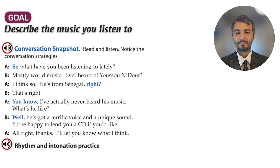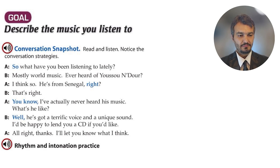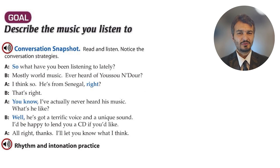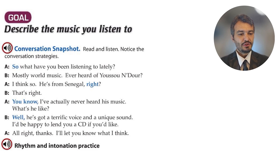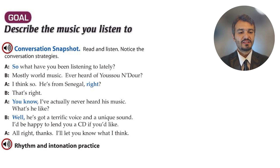'Ever heard of Yusendor?' — meaning have you ever heard of him? He is a musician from Senegal. You can Google or YouTube him. A says: 'I've actually never heard his music. I have no idea what type of music he produces. What's he like?' B says: 'Well, he's got a terrific voice and a unique sound.' Terrific means excellent — synonyms include wonderful, marvelous, magnificent, superb, splendid, glorious, outstanding.